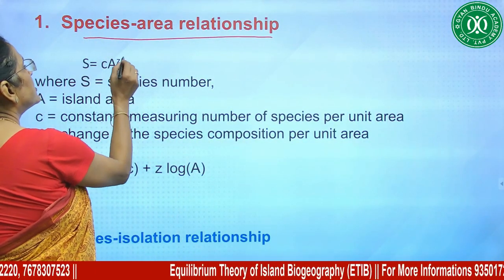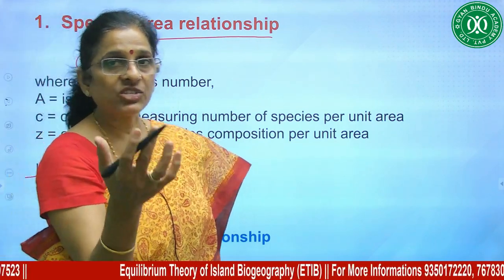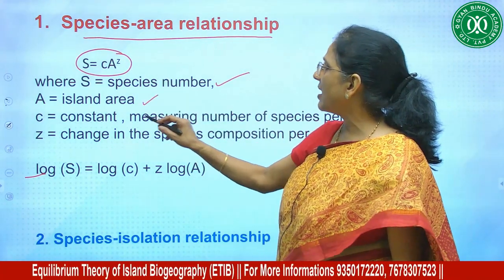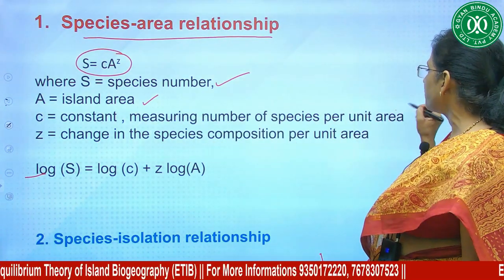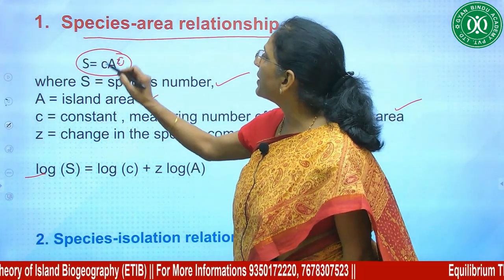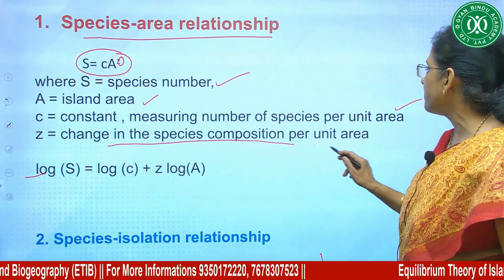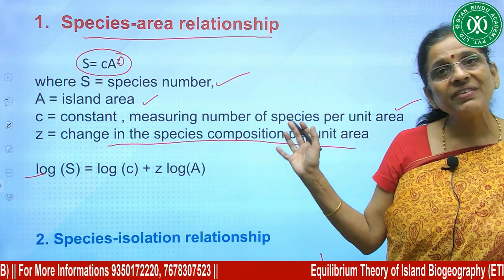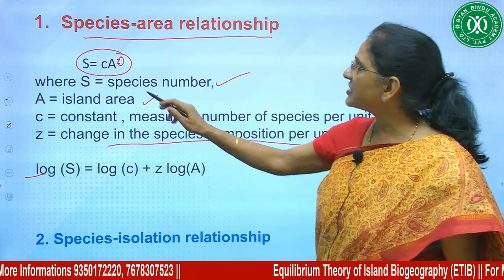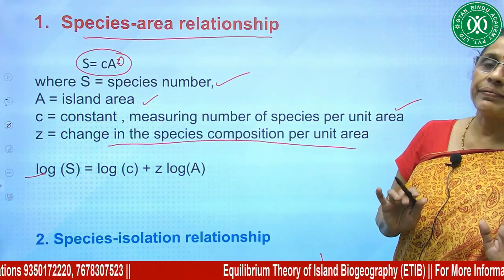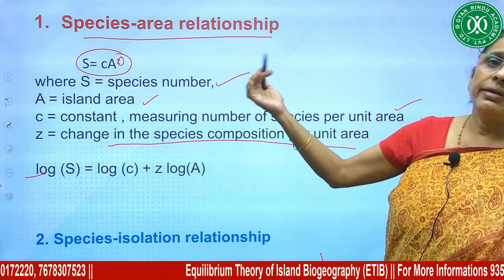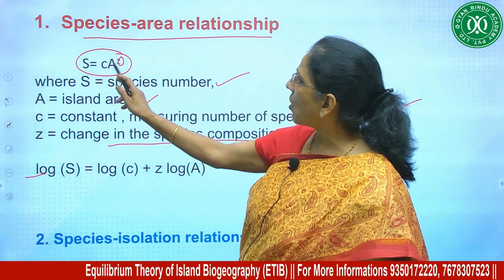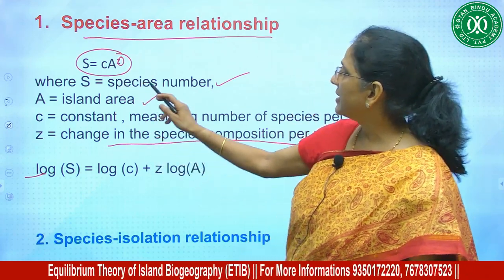The equation is S = C × A^Z, where S is the species number, A is the island area, C is a constant measuring the number of species per unit area, and Z — very important — the power Z represents change in species composition per unit area. No time factor is involved; it is not a turnover rate. It becomes a linear plot when we take the log of this equation.